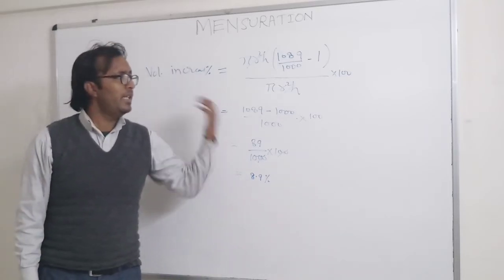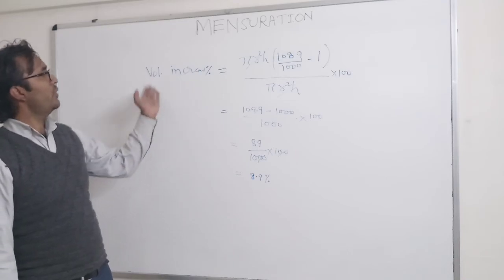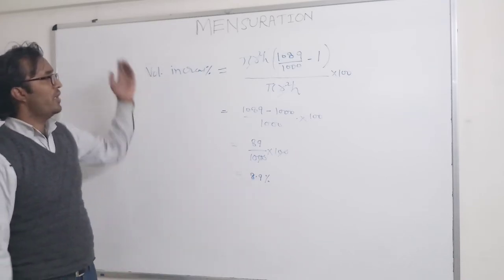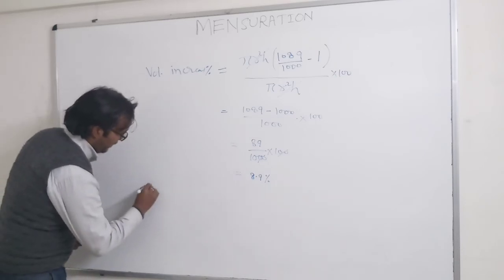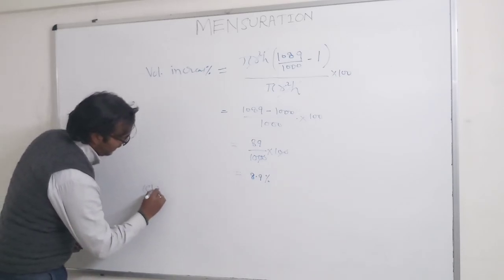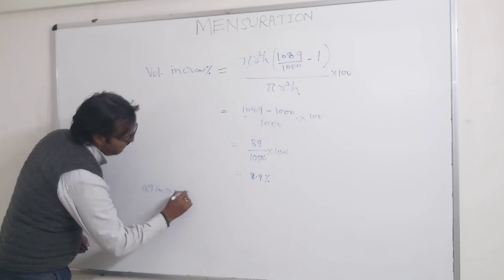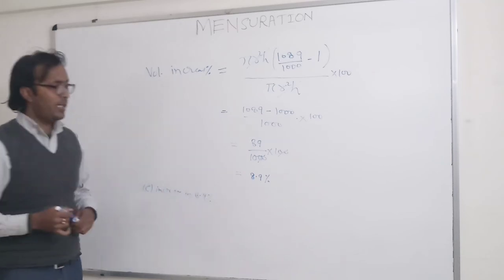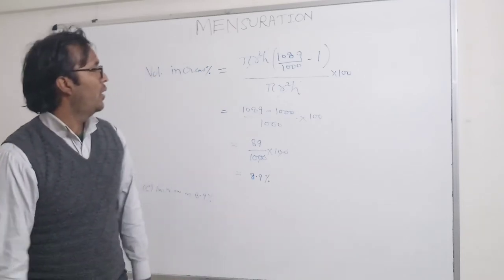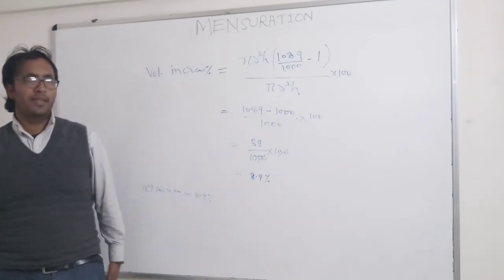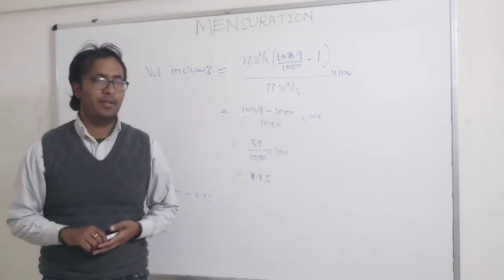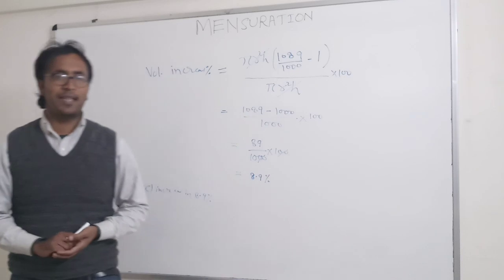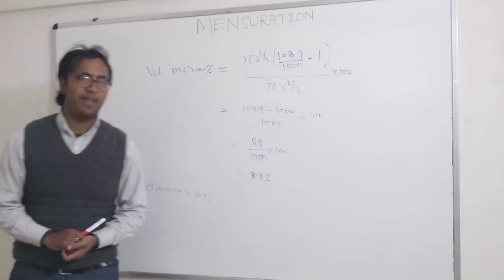So in that cylinder case, from the original to the new one, the volume increased by 8.9 percent. The answer to our question is option C: increased by 8.9 percent. Dear friends, this was my second question of mensuration. If you like it, please like and subscribe to my channel, Elixir20. Thank you.